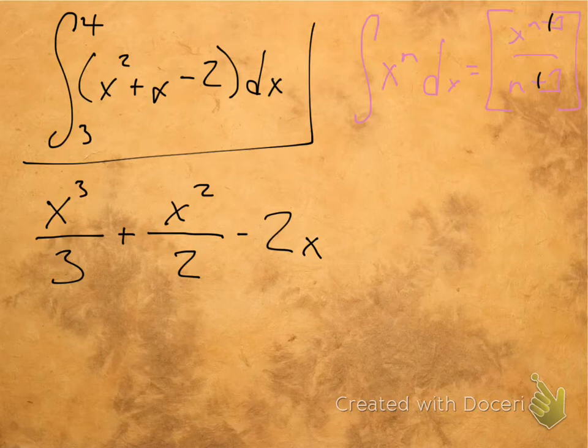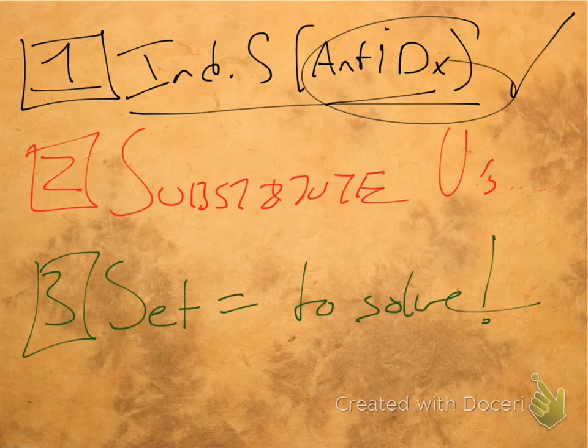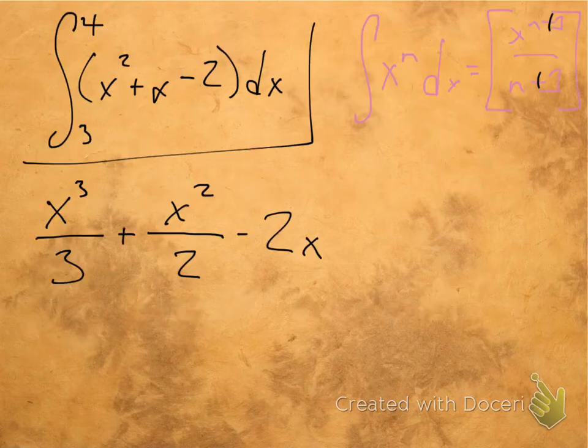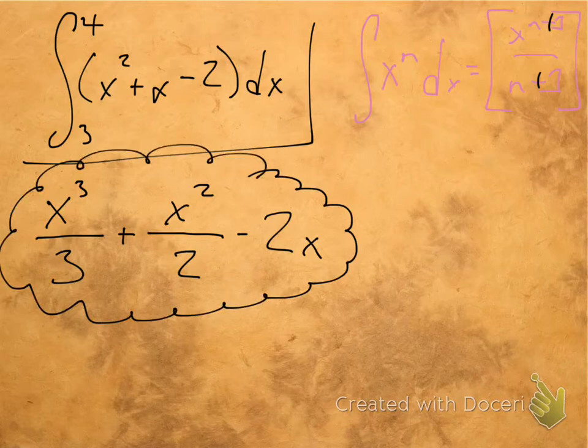So that's where we're getting that from. So this is the antiderivative of x squared plus x minus 2. So we have all the information we need for step 1. Step 1 is taken care of. We have our indefinite integral. So we'll go ahead and put this around it here. We've got our indefinite integral. What do we do now?